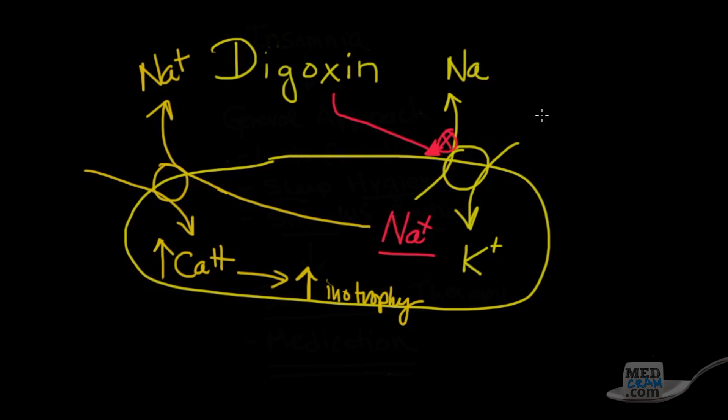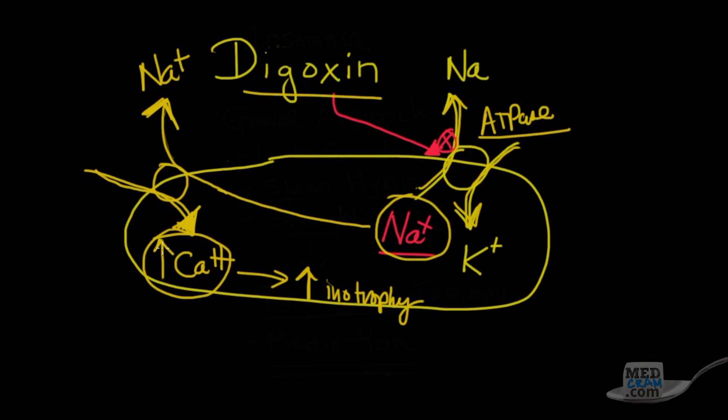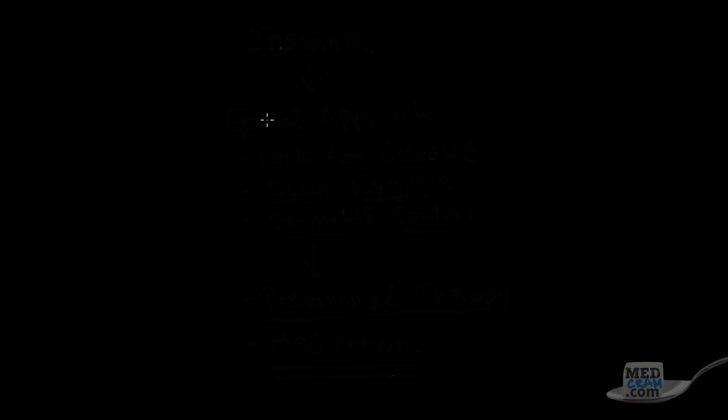So let's go over this one more time. Normally the ATPase pumps in potassium and pumps out sodium. However, digoxin blocks this, so sodium concentration in the cell increases. As a result, it goes down this concentration gradient and brings in calcium, increasing the calcium concentration inside, which leads to increased inotropy. That's how digoxin makes your heartbeat stronger.